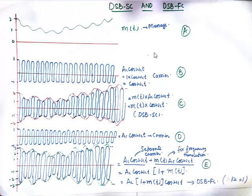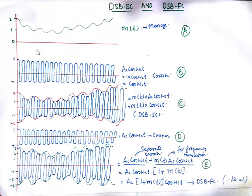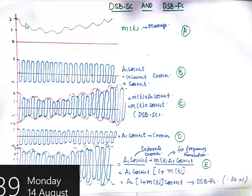Now let me take a simple example. I am taking a message signal and talking about amplitude modulation. When I talk about modulation, it means changing the characteristics of a carrier wave. A carrier wave is simply a high-frequency wave of constant amplitude and constant frequency, as you can see in wave B. A message signal can be anything — for example, this irregular signal, which means it is not a single-tone signal and will have many frequencies involved.